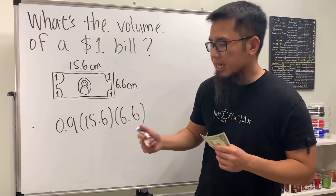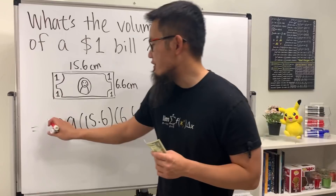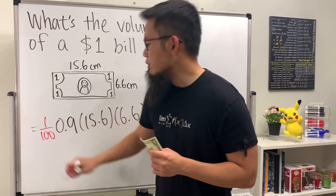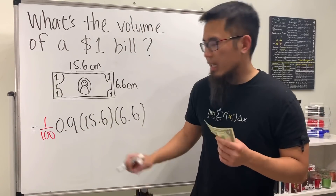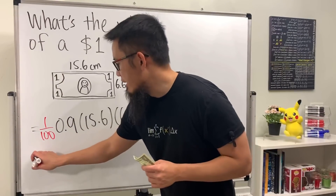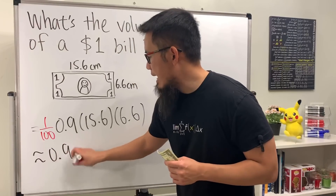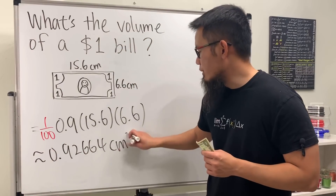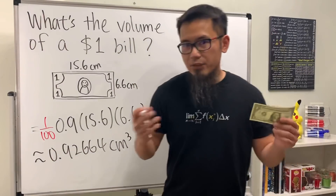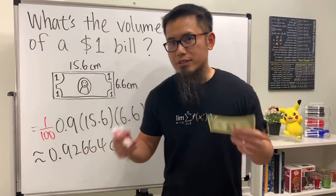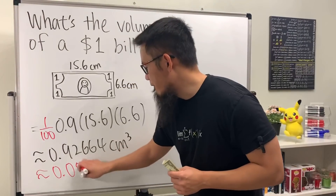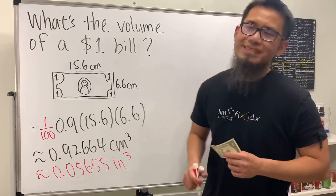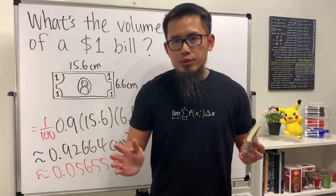We just have to divide everything by 100. The volume of a single dollar bill is approximately 0.92664 cubic centimeters, or if you want to use inches, 0.05655 cubic inches.